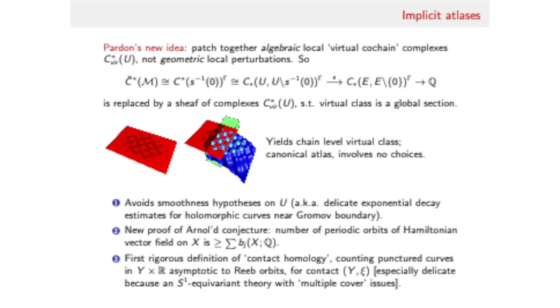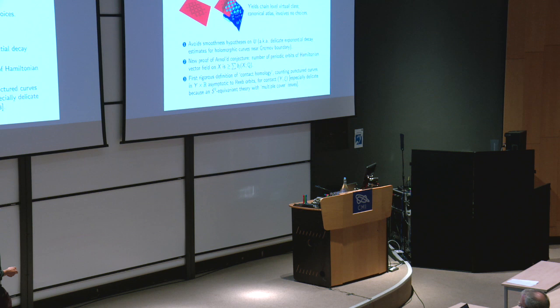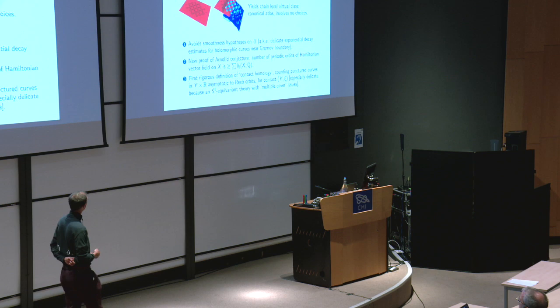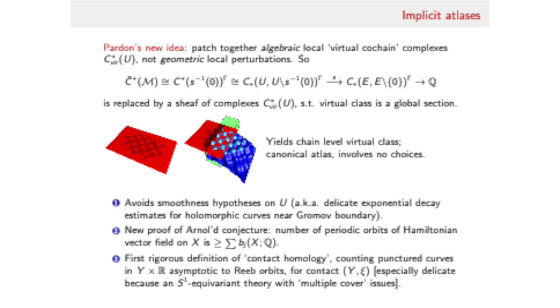John replaces this by a sheaf of cochain complexes that plays the role of this sheaf of local perturbations. This has a lot of advantages. He sets things up such that he never makes a choice - he's understood that every time you make an unnecessary choice an angel kills a kitten. The construction is extremely insensitive to choosing to set up your foundation slightly differently. It avoids all the smoothness hypotheses on these local thickenings U of your moduli space. That doesn't just simplify the analysis but it makes it much easier to carry out the analysis in situations where you want equivariance with respect to group actions. Because transversality is hard and equivariant transversality is harder.